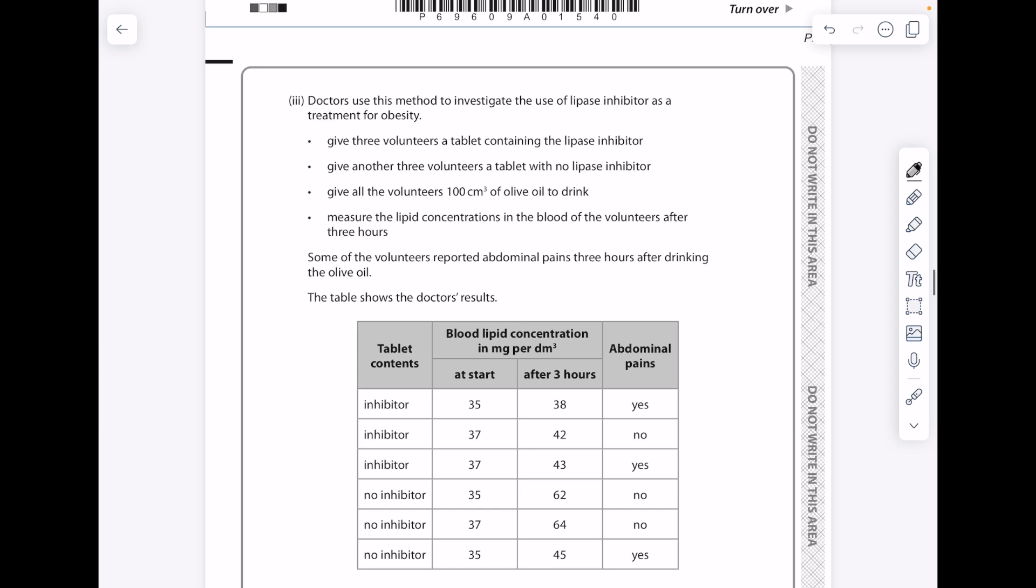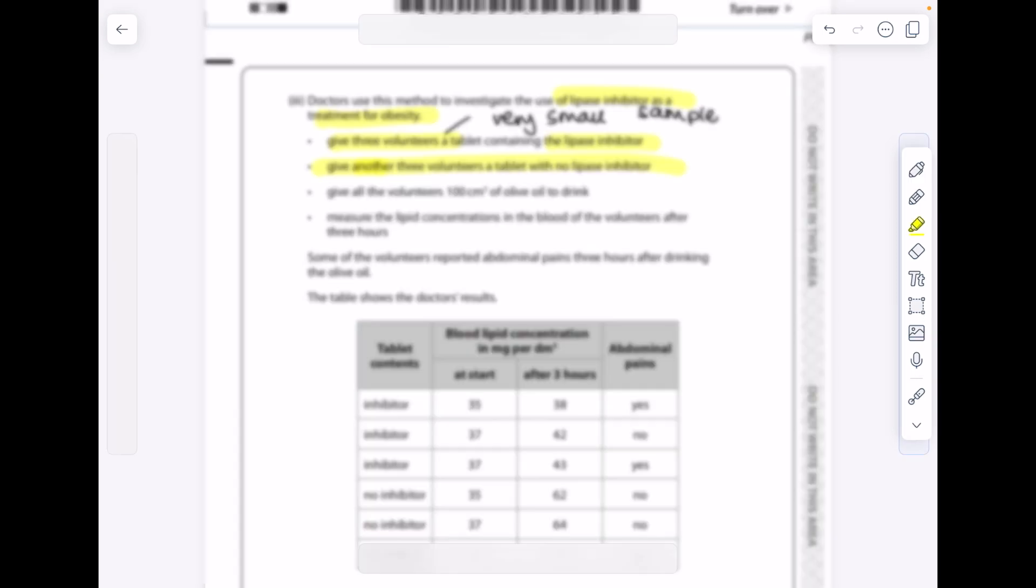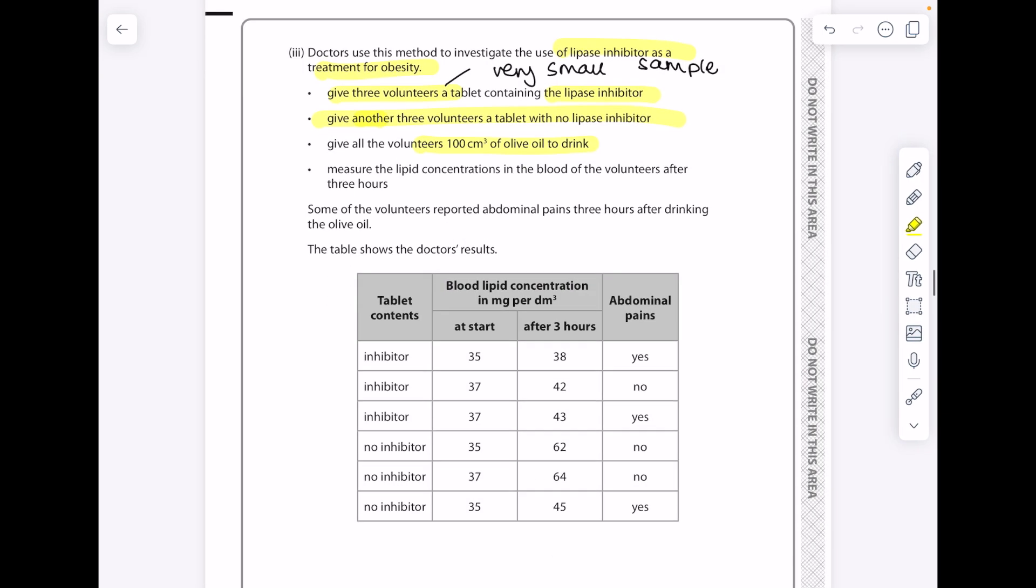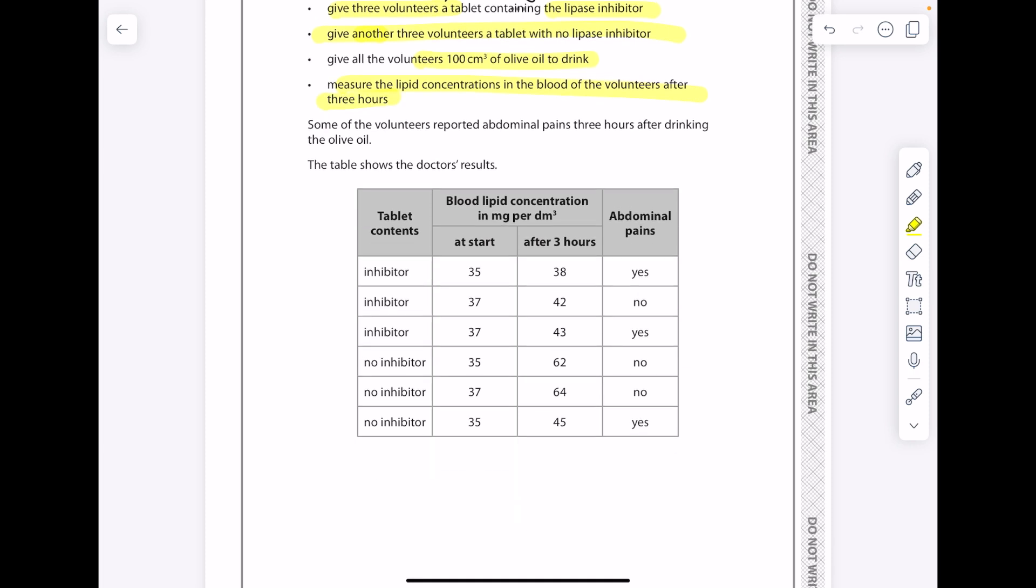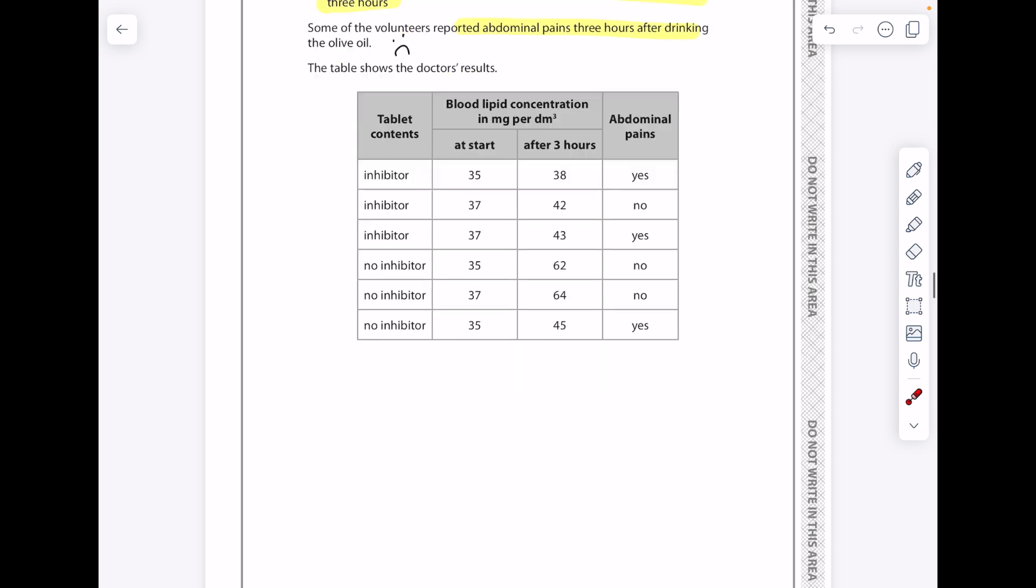Doctors use this method to investigate the use of lipase inhibitor as a treatment for obesity. Give three volunteers a tablet containing the lipase inhibitor, give another three volunteers a tablet with no lipase inhibitor. So straight away I'm going to make a comment which is it's a very small sample, only six people. Give all the volunteers 100 centimeters cubed of olive oil to drink. Measure the lipid concentrations in the blood of the volunteers after three hours. Some of the volunteers reported abdominal pains after drinking the olive oil. That's really nasty but that doesn't actually relate to the experiment in terms of whether inhibitor or no inhibitor has been given.